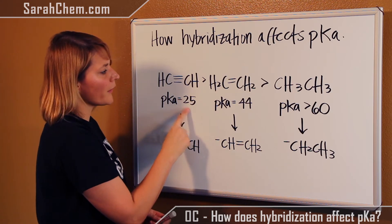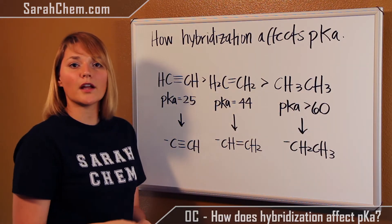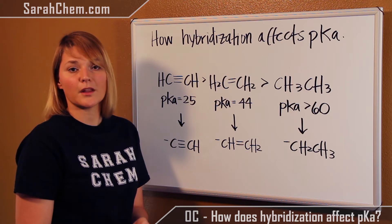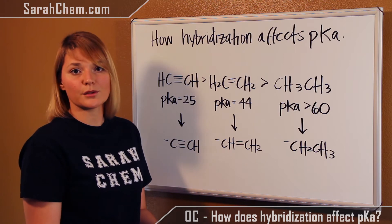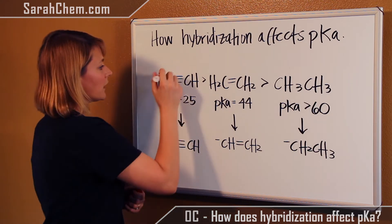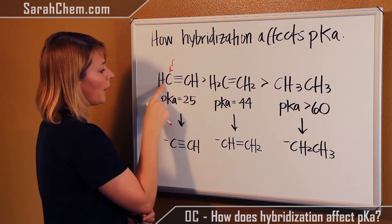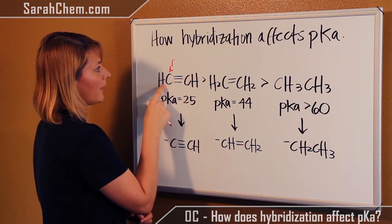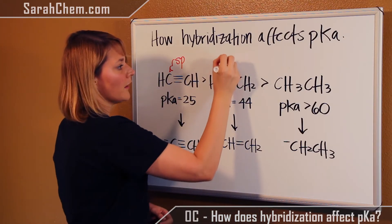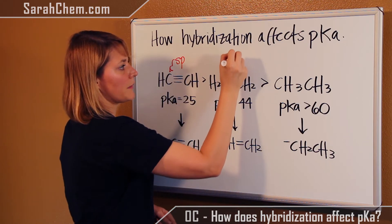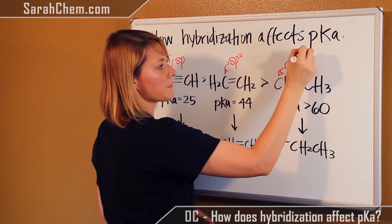You notice that in every case, it's a carbon that is losing the hydrogen, so you're not dealing with a size or electronegativity difference. The only difference between these compounds is the hybridization of the carbon that's losing the hydrogen. The first carbon has two areas of electron density — the triple bond and the bond to hydrogen — making it sp. The second carbon has three areas of electron density, so it's sp2. And the third carbon has four areas, so it's sp3.